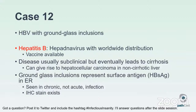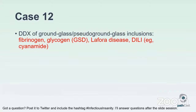The differential for ground glass or pseudo-ground-glass inclusions includes fibrinogen (incidental or in fibrinogen storage diseases), glycogen storage diseases (of which there are many), Lafora disease, and various drugs — the prototype perhaps being cyanamide. Many drug-induced liver injuries can cause similar ground glass inclusions.